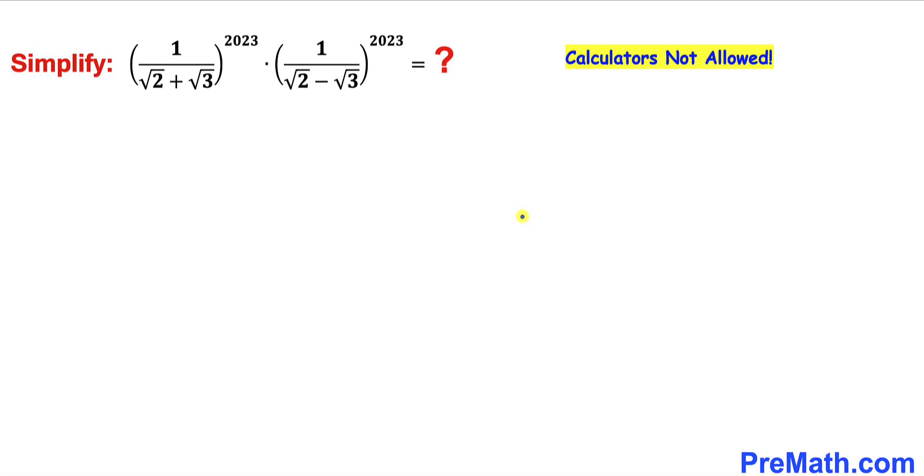Let's go ahead and get started with the solution. Here's the very first thing we can see: we have the identical exponents for both of them. Therefore, let's recall this basic rule of exponents: a power n times b power n could be written as ab whole power n.